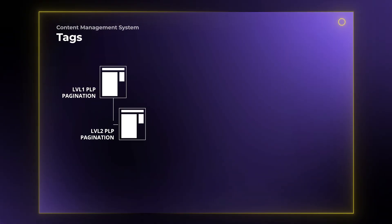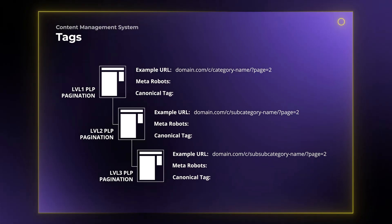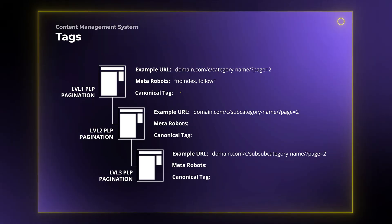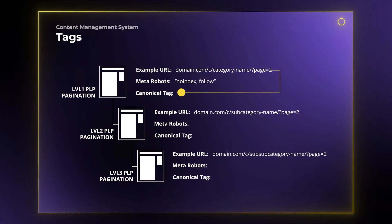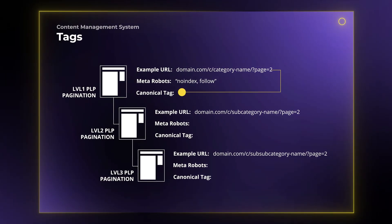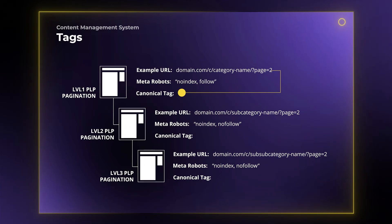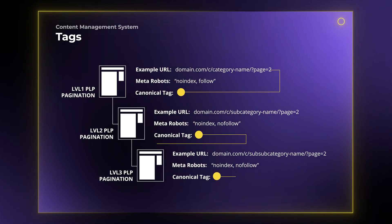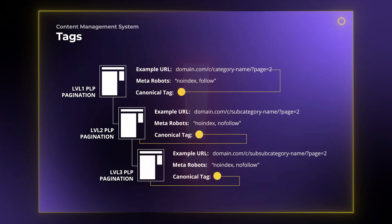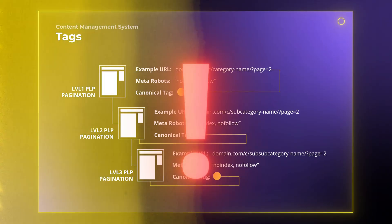But setting them, for example, for some category-level paginations to noindex follow with self-referencing canonical tags, and lower category levels to noindex nofollow with canonical tags pointing to category pages, is very difficult in any CMS. Controlling the link juice flow through an online store as well as crawler and indexing budget became even more important for ranking in LLMs and Google's AI Overviews and the new AI mode.